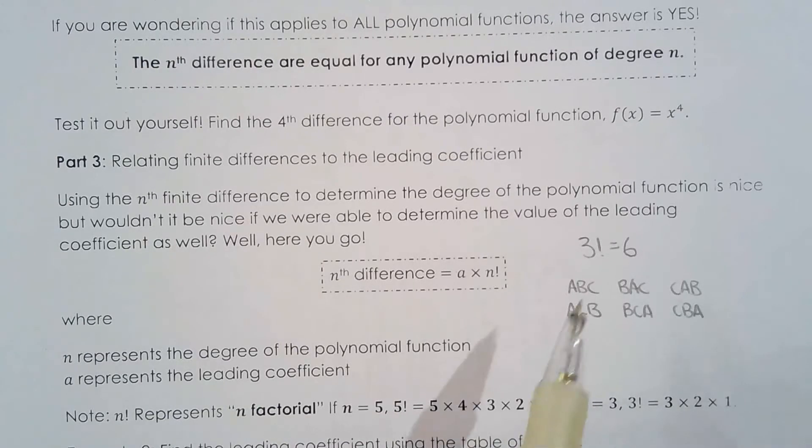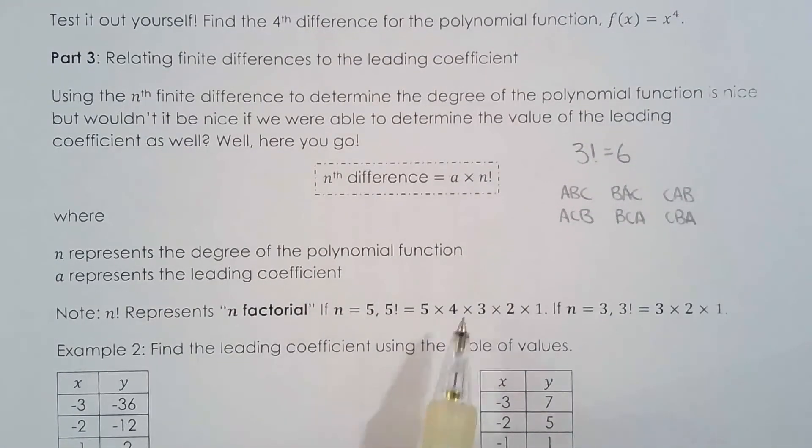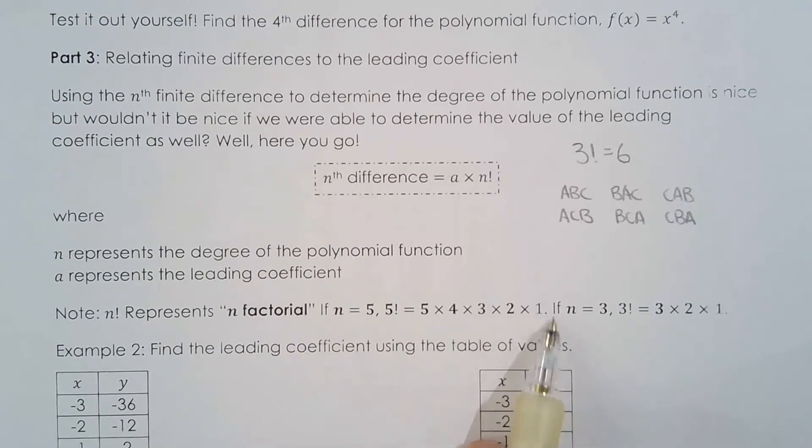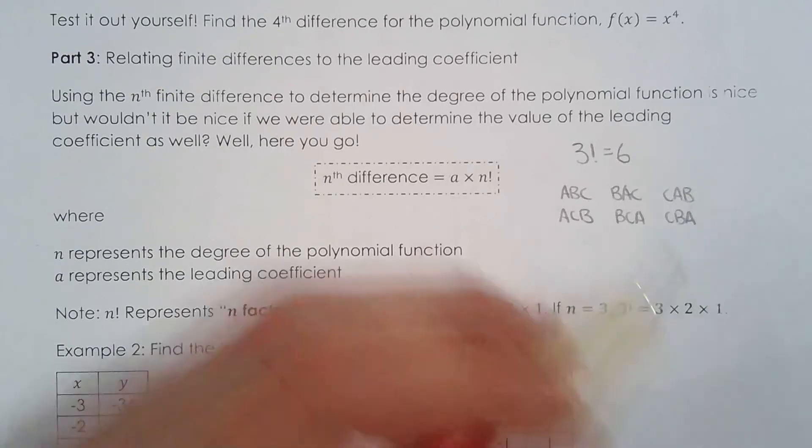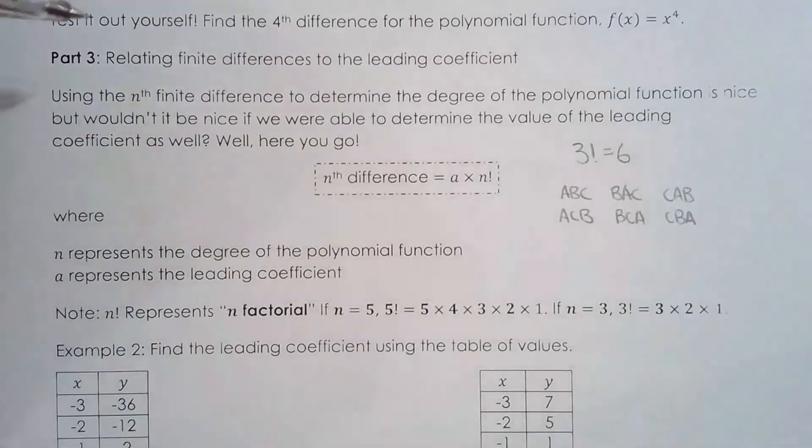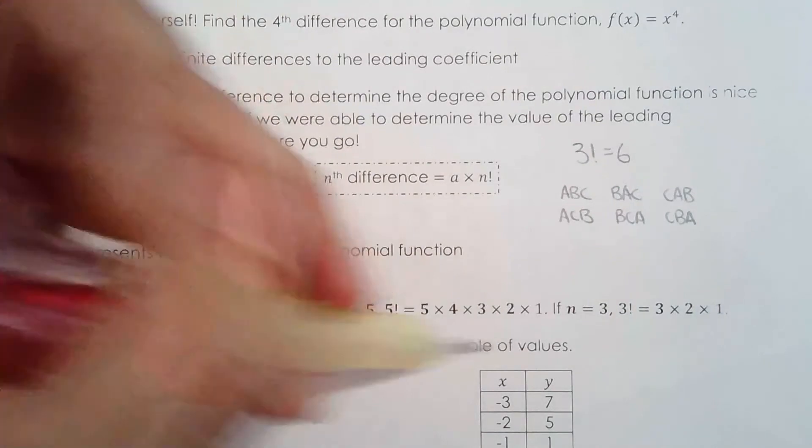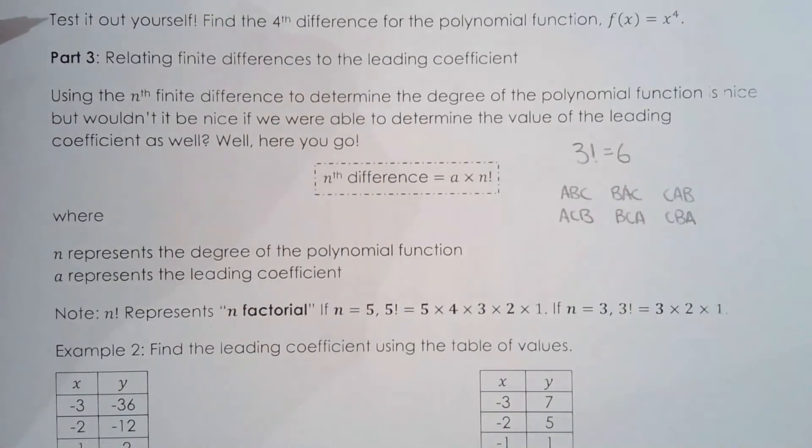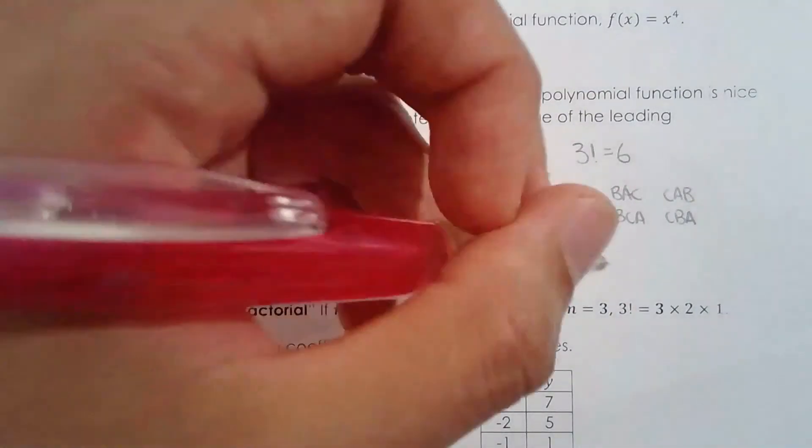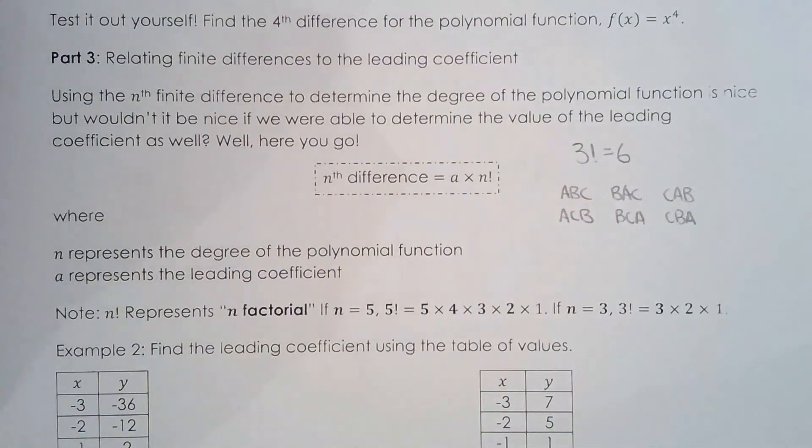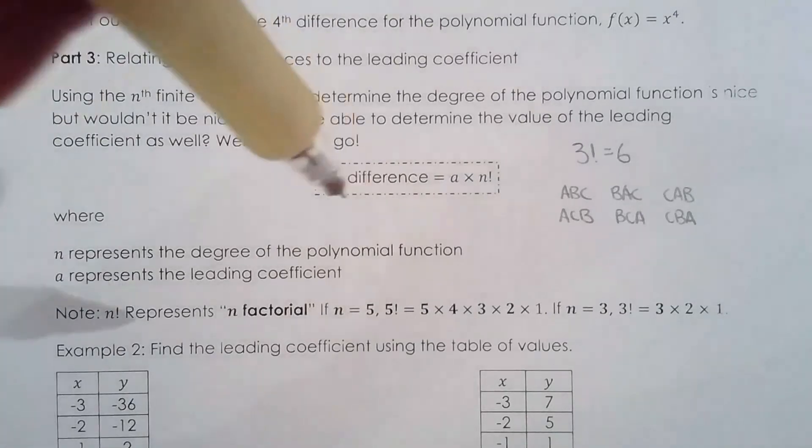You can think what's 5 factorial? Well, 5 factorial is 5 times 4 times 3 times 2 times 1. But whatever this is equal to, I really want you to think of it as rearrangement of 5 items. How many ways can I rearrange 5 items? But for this lesson, what we're going to do is solve for the leading coefficient or solve for the nth difference once you're given the table.